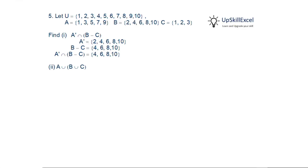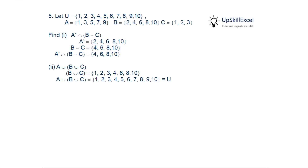Second question: find A union B union C. We start by calculating B union C, then take the union with A. Since all elements get included, A union B union C equals U.